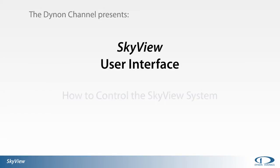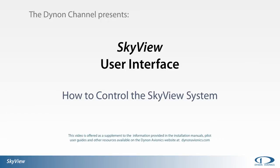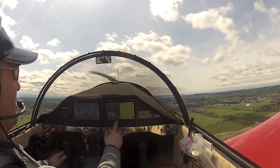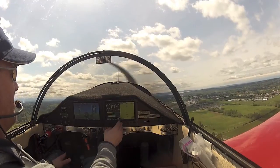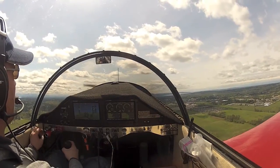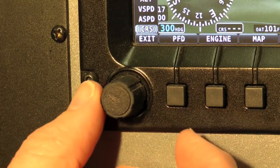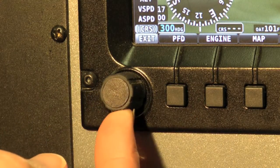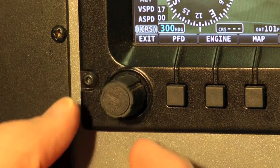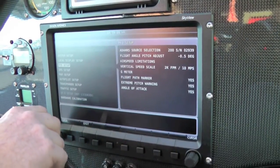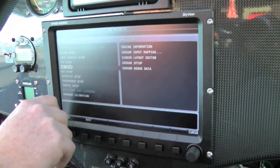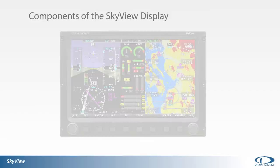Welcome to the Dynon channel. This video covers the SkyView user interface and how to control the SkyView system. The SkyView display with built-in controls is designed to perform all system functions through an easy-to-use, intuitive user interface. The SkyView D700 7-inch display and SkyView D1000 10-inch display are identical in functionality and presentation — the only difference is the size and resolution of the screen. Here's a quick overview of the basic components of a SkyView unit.